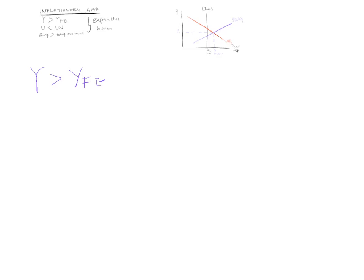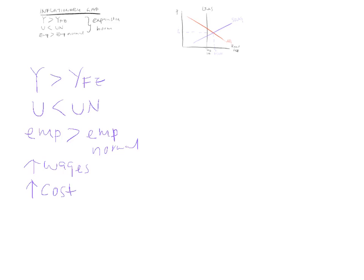We know that we are producing more than normal, unemployment is less than normal, and employment is greater than normal. The economy is doing really well, so workers ask their boss for more money. If their boss doesn't give them more money, they work for somebody else — everybody is looking to hire. So eventually wages have to go up. A rise in wages is a rise in the cost of production, making it more expensive to produce goods and services. This means your short-run aggregate supply curve is going to shift to the left — you supply less at every given price level.